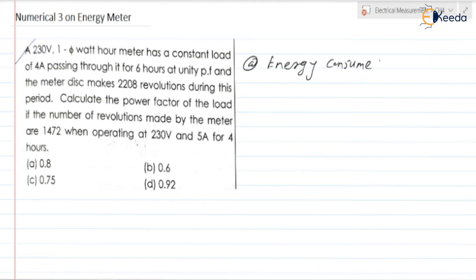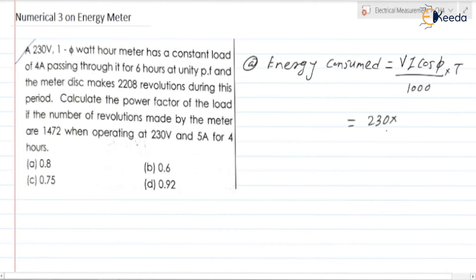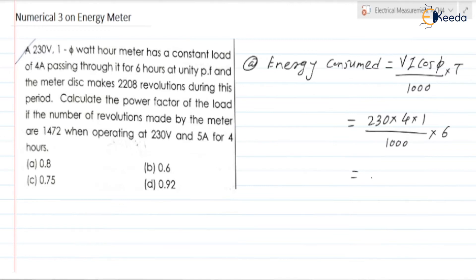Energy consumed is equal to power into time, where power is V into I into cos phi, divided by 1000 to get kilowatt hours, into time t. So it is equal to 230 into 4 into 1 (unity power factor) divided by 1000, into 6 hours. That gives us 5.52 kilowatt hour. This is the actual energy consumed.